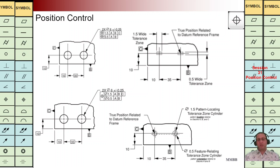We are going to have two parallel boundaries, and these boundaries should be perpendicular to A. We are going to have an offset with the distance of one and a half with respect to B, and we are going to have an offset with respect to C with the size of one and a half.